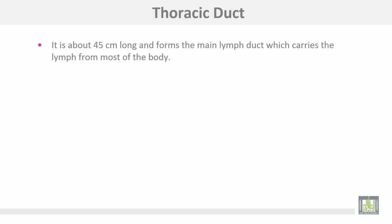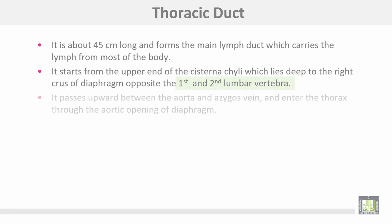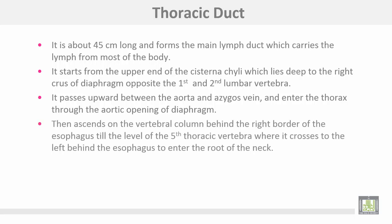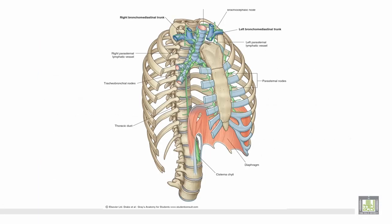The thoracic duct drains the lymph. It is about 45 cm long and forms the main lymph trunk, which carries lymph from most of the body. It starts from the upper end of the cisterna chyli, which lies deep to the right crus of the diaphragm opposite the 1st and 2nd lumbar vertebrae. It passes upward between the aorta and the azygous vein, enters the thorax through the aortic opening of the diaphragm, then ascends on the vertebral column behind the right border of the esophagus until the level of the 5th thoracic vertebra, where it crosses to the left behind the esophagus to enter the root of the neck.